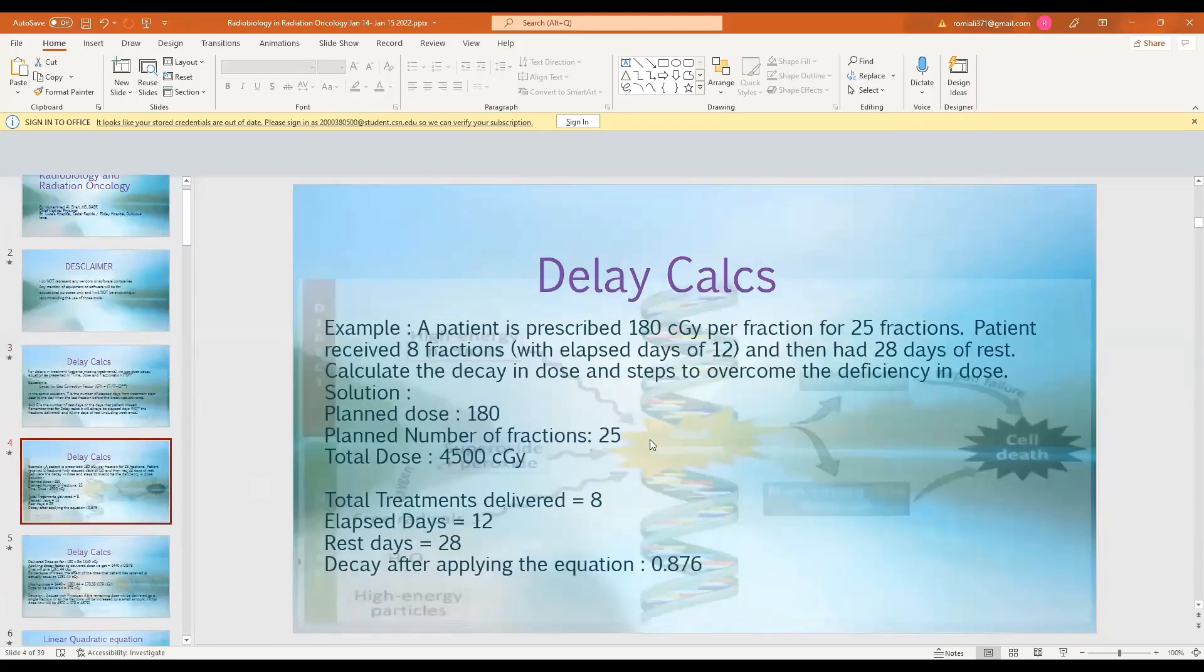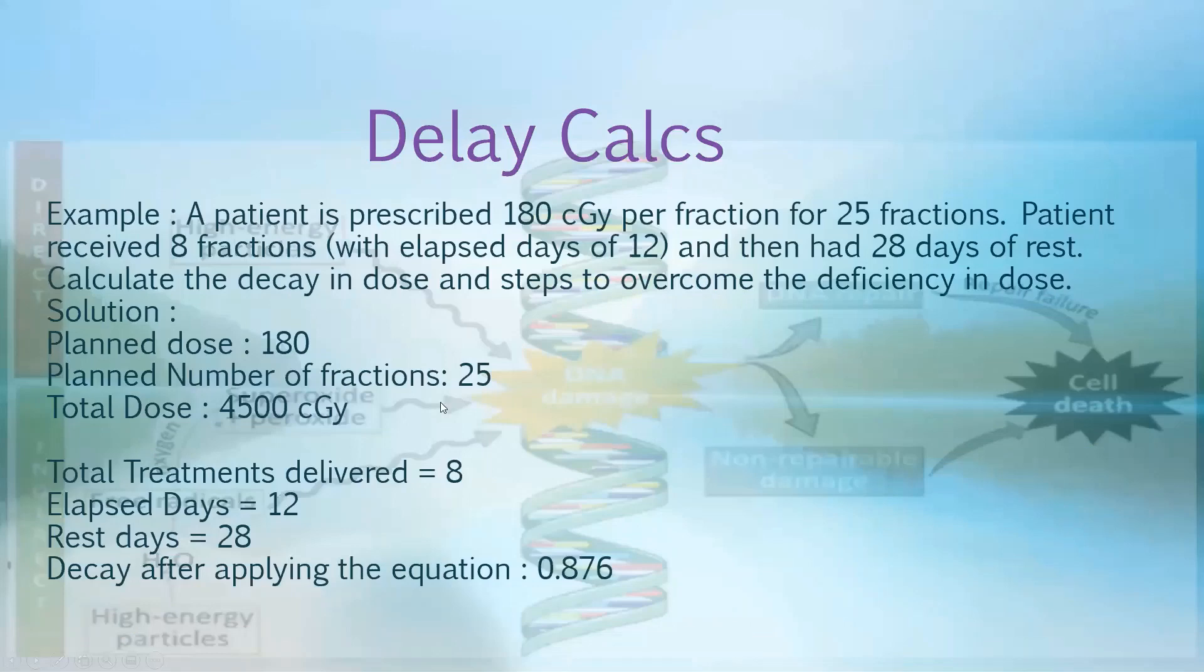Now we have the concepts. Looking at our examples, a patient is prescribed a dose of 180 centigrade per fraction in 25 fractions. The patient received 8 fractions with elapsed days of 12 days, then had rest days of 28 days. Calculate the decay in dose and the steps to overcome the deficiency in dose.